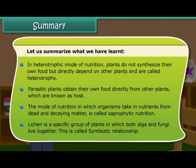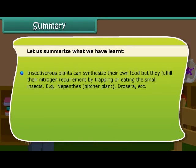Lichen is a specific group in which both algae and fungi live together — this is called a symbiotic relationship. Insectivorous plants can synthesize their own food but fulfill their nitrogen requirement by trapping or eating small insects. Examples include Nepenthes, pitcher plant, Drosera, etc.